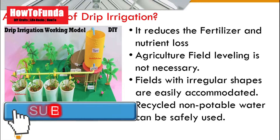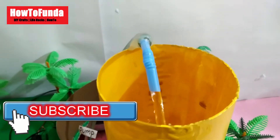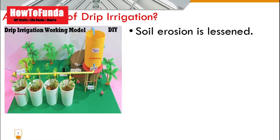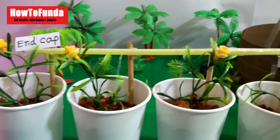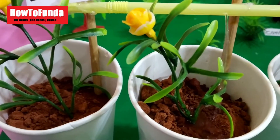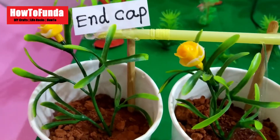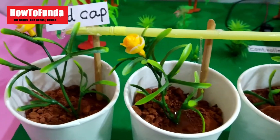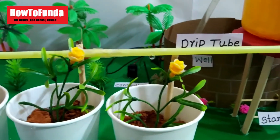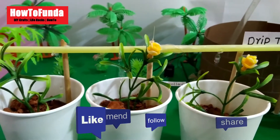Another advantage is that you can recycle water and easily use all recycled water for your plants. Because of drip irrigation, soil erosion is much less compared to normal irrigation methods, and weed growth is also very low. Water gets distributed uniformly across all plants and trees.